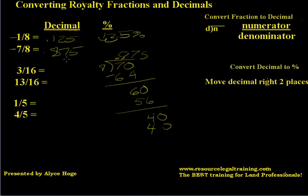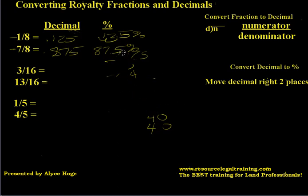7/8 becomes 0.875. Then the percent — we're going to move this decimal over two places — and that's going to be 87.5%. So that's a 1/8 royalty. Not very many of those these days, but they were very common in the early days of the oil and gas lease.